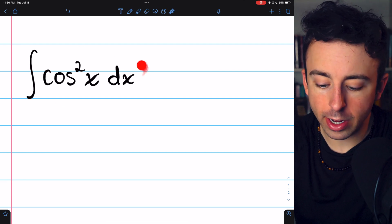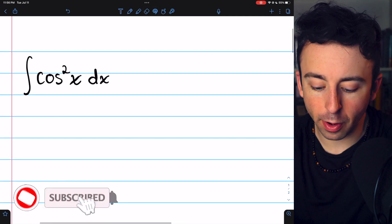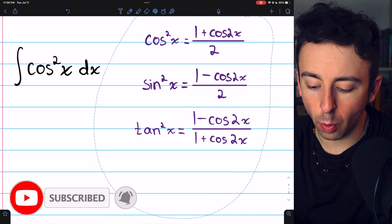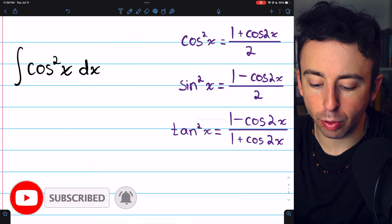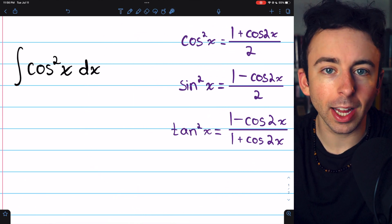While it's not obvious how to integrate cosine squared of x at first, it's made quite straightforward by an application of the proper power reducing formula.